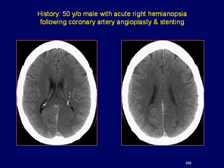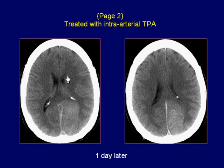Non-contrast CT demonstrates loss of gray-white matter junction in the left occipital lobe with associated mass effect, consistent with acute infarct. CT examination non-contrast one day later after treatment with intra-arterial TPA demonstrates increased mass effect in the left occipital lobe with associated hyperdensity.